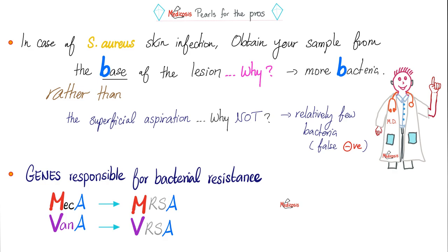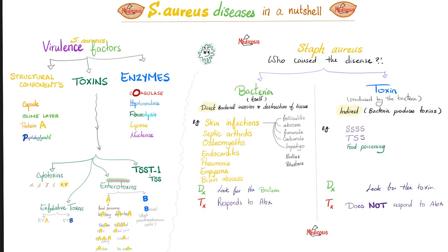MRSA is resistant because of the mecA gene; VRSA is resistant because of the vanA gene. In summary: virulence factors and diseases of Staph aureus have been covered. Diagnosis is by microscopy, culture, nucleic acid amplification test, identification, and antibody detection. Treatment: food poisoning is self-limiting; if sensitive MSSA give ox/clox/diclox/naf; if MRSA give vancomycin or linezolid; if VRSA give linezolid.